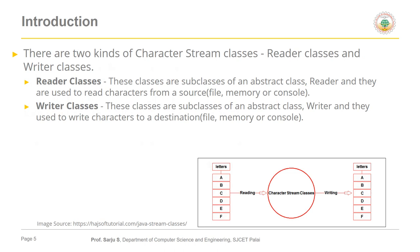We have two kinds of character stream classes: a Reader class and a Writer class, similar to the InputStream and OutputStream classes. The Reader class is a subclass of an abstract class used to read character streams from a data source — the data source may be a file, a console, memory, or anything. The Writer class is used to write data.